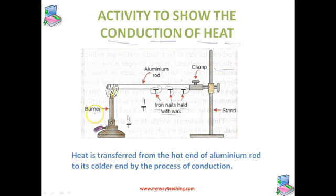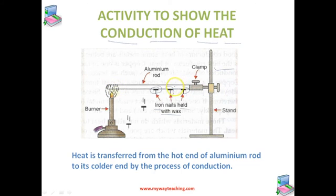From this activity, what is the conclusion we can make? The burner is placed below the left end of the aluminium rod, so the left end gets heated first while the right end remains cold. Heat is transferred from the hotter left end to the colder right end. As heat travels from left to right along the aluminium rod, it melts the wax holding the nails, causing them to fall one by one. We can conclude that heat is transferred from the hot end of the aluminium rod to its colder end by the process of conduction.